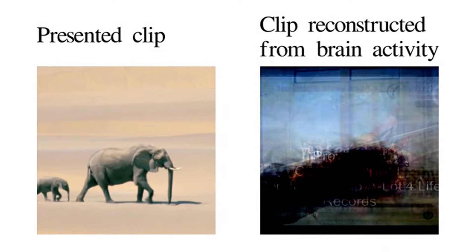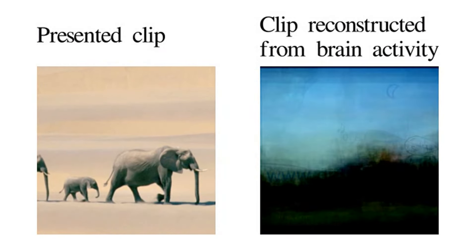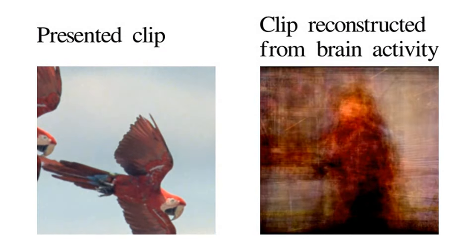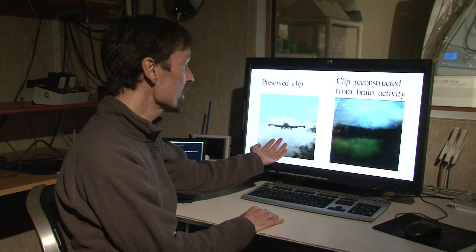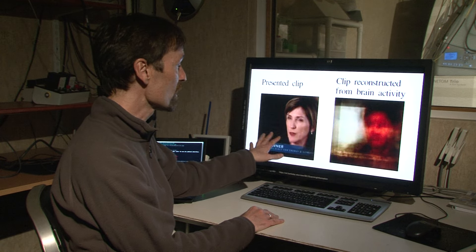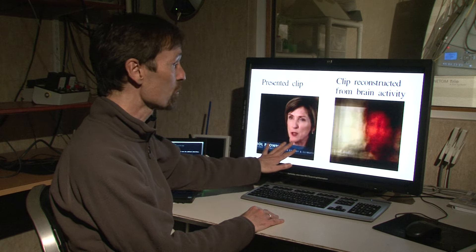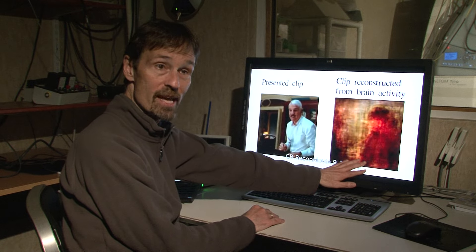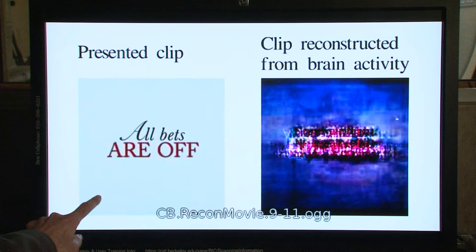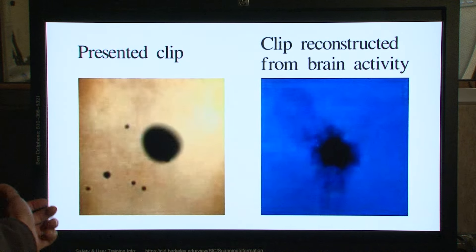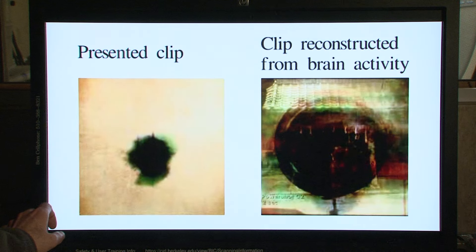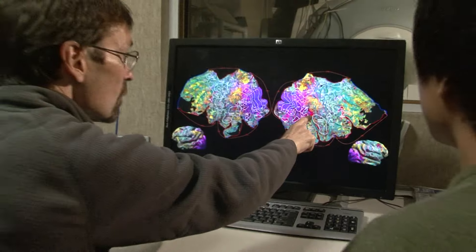On the left here is the movie we actually showed people, and on the right is our reconstruction. When the movie we showed has a fairly common object like a person, our reconstructions are actually fairly accurate. When the movie we showed is something rarer, like an abstract thing, then our reconstructions are coarser.